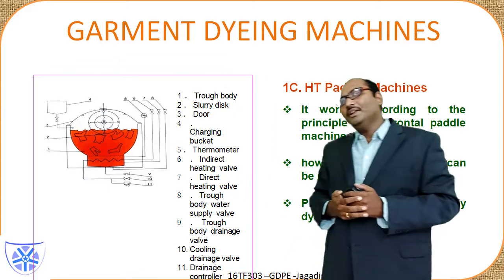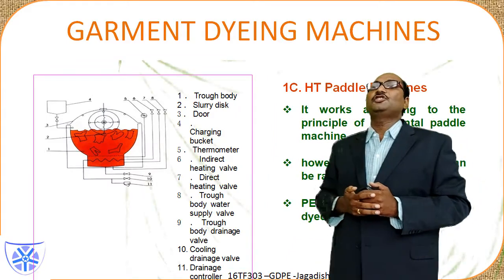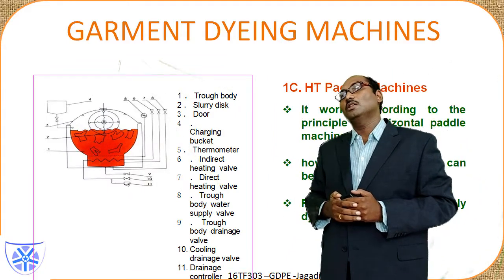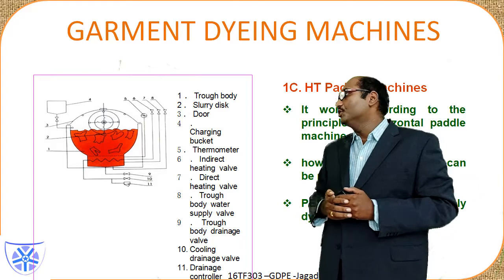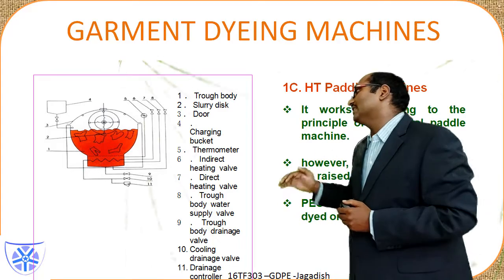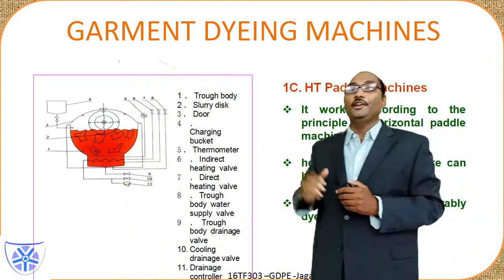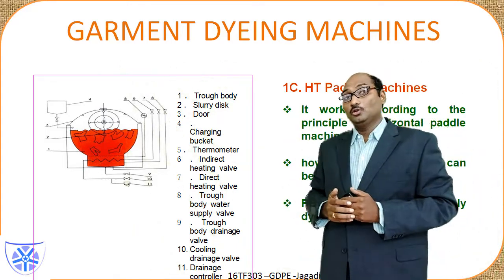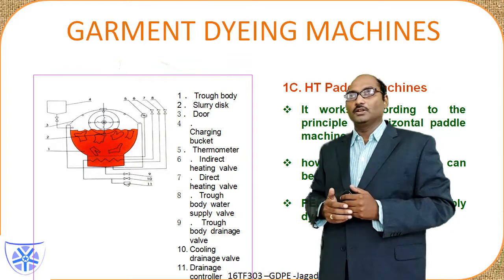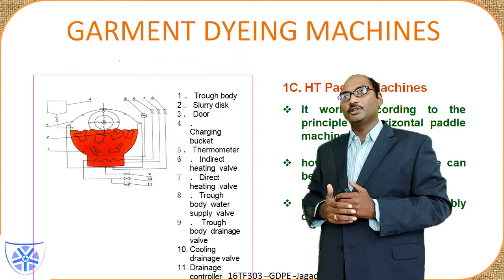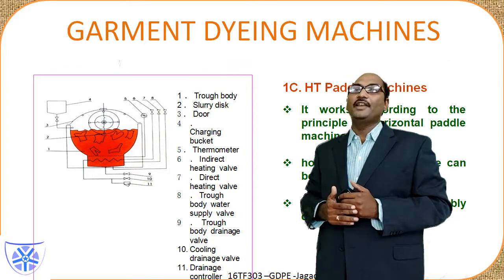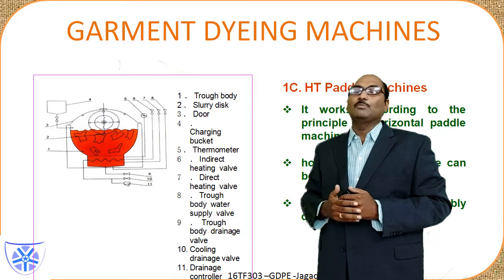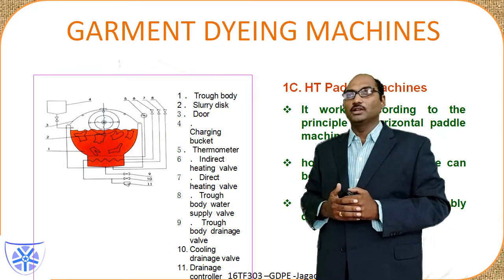The HD paddle machine — that is, the high temperature paddle machine — can raise temperatures up to 140 degrees centigrade. Some polyester articles such as polyester shirts can be dyed at these temperatures using additional chemicals.